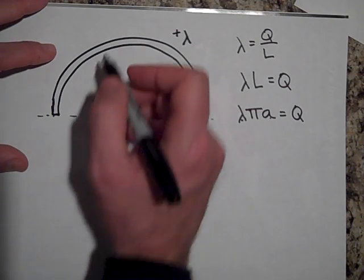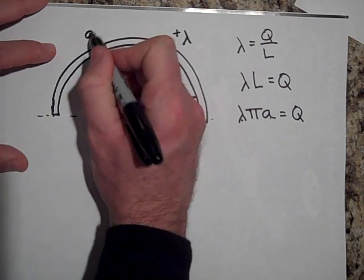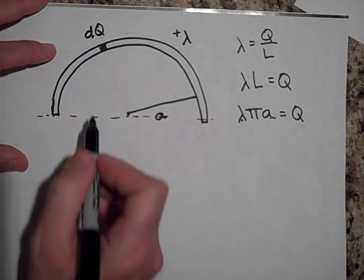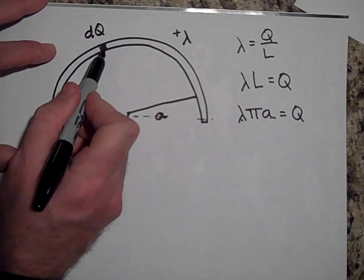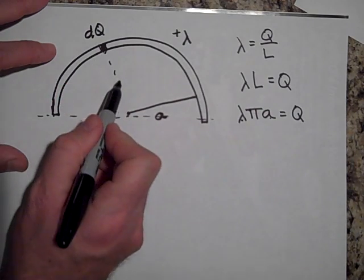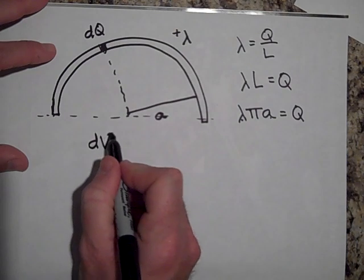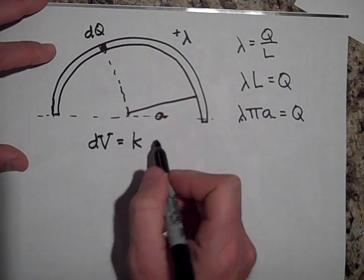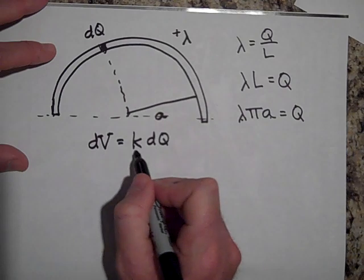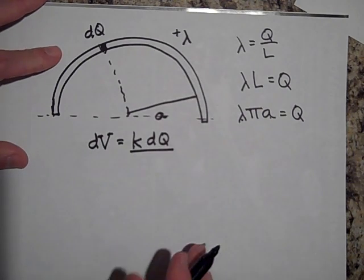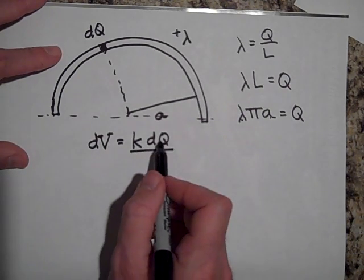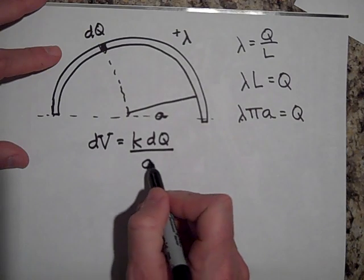Okay, alright. So the way you do this is you break it - you segment it into a little dq, and it turns out that that dq is a distance A away. So the little voltage just due to that one is going to be k times dq using a point charge voltage of a point charge. k dq all over a not squared.